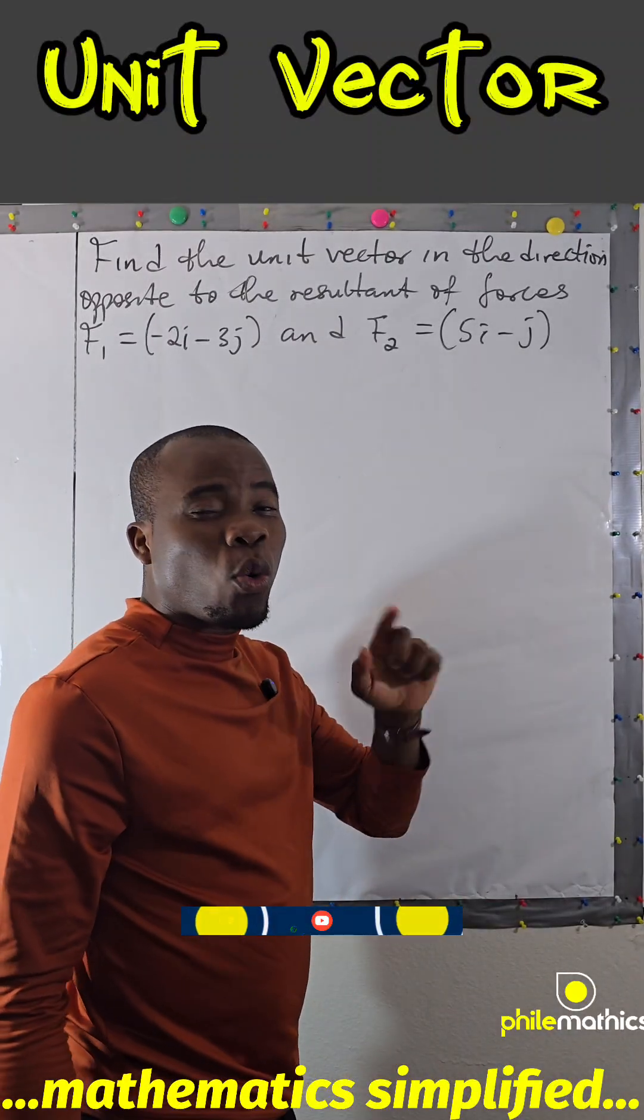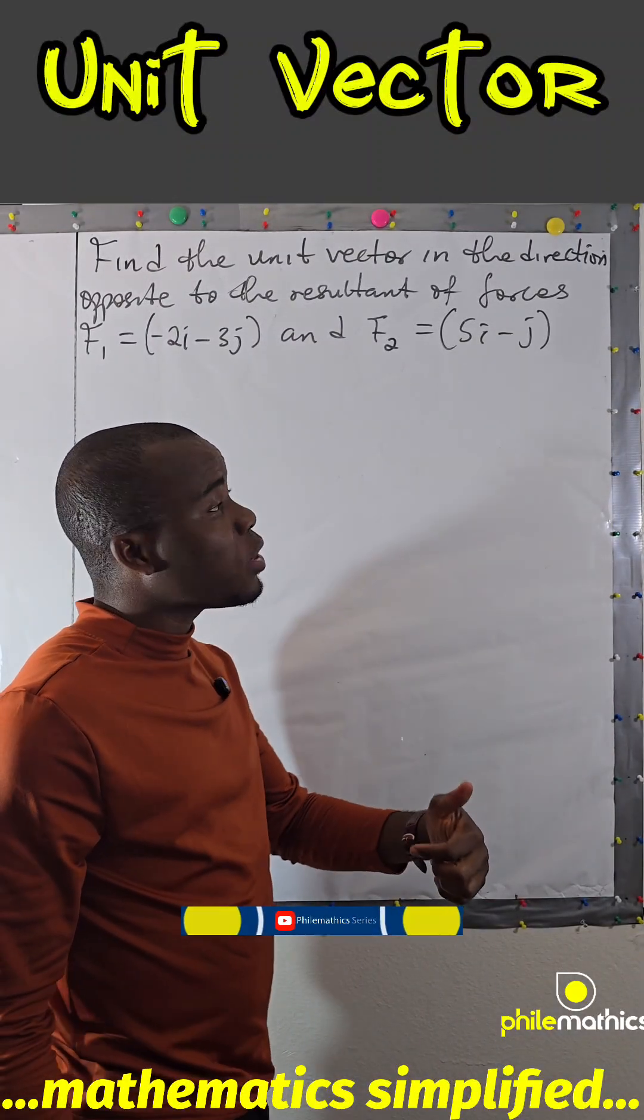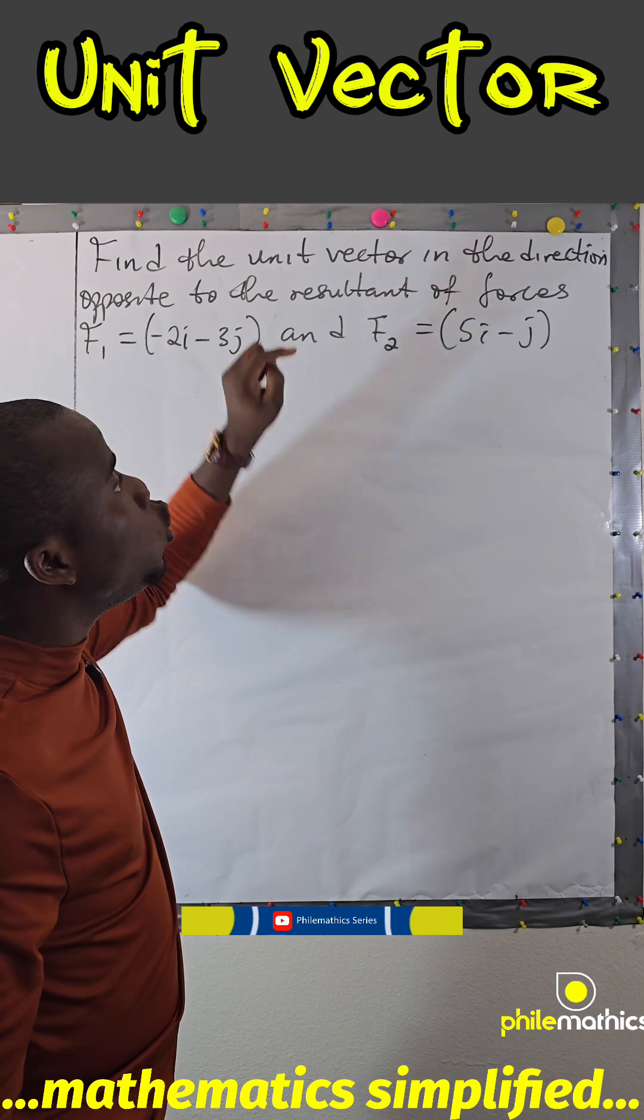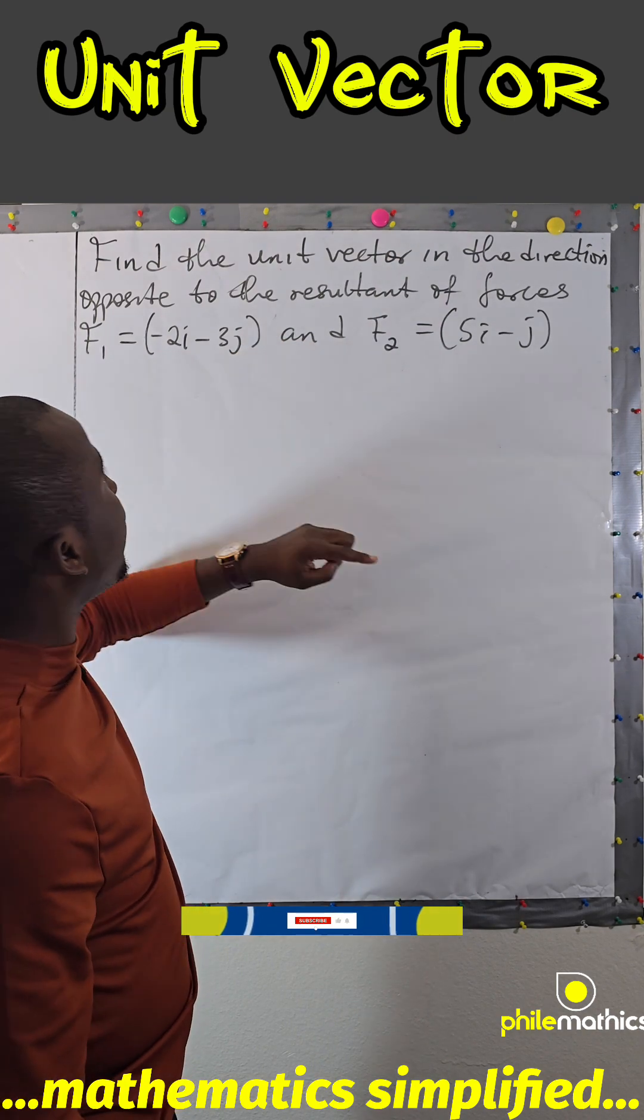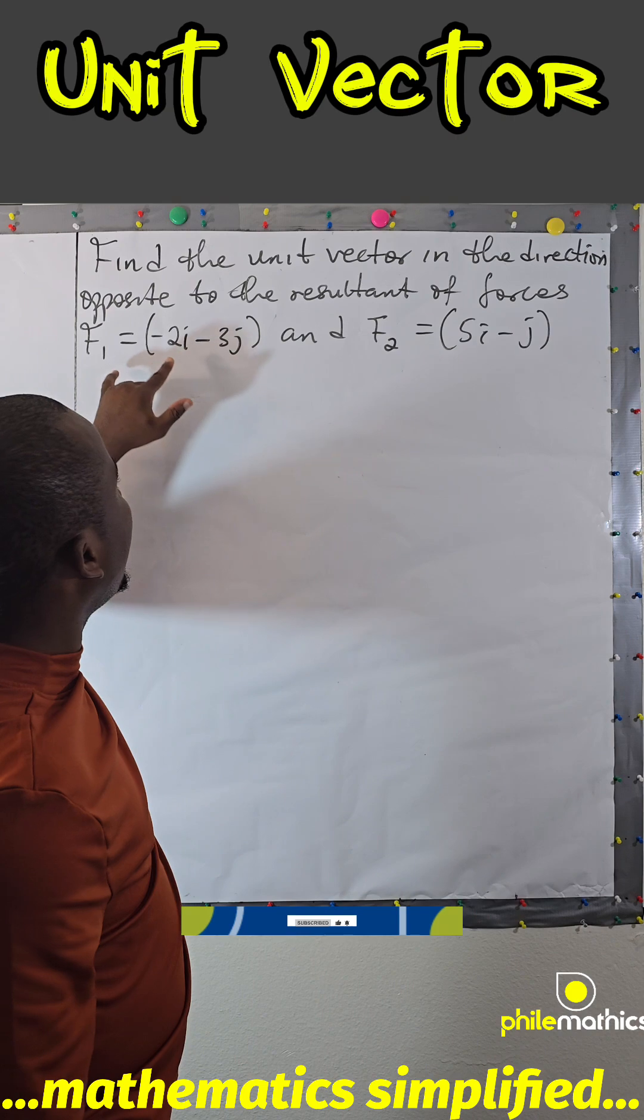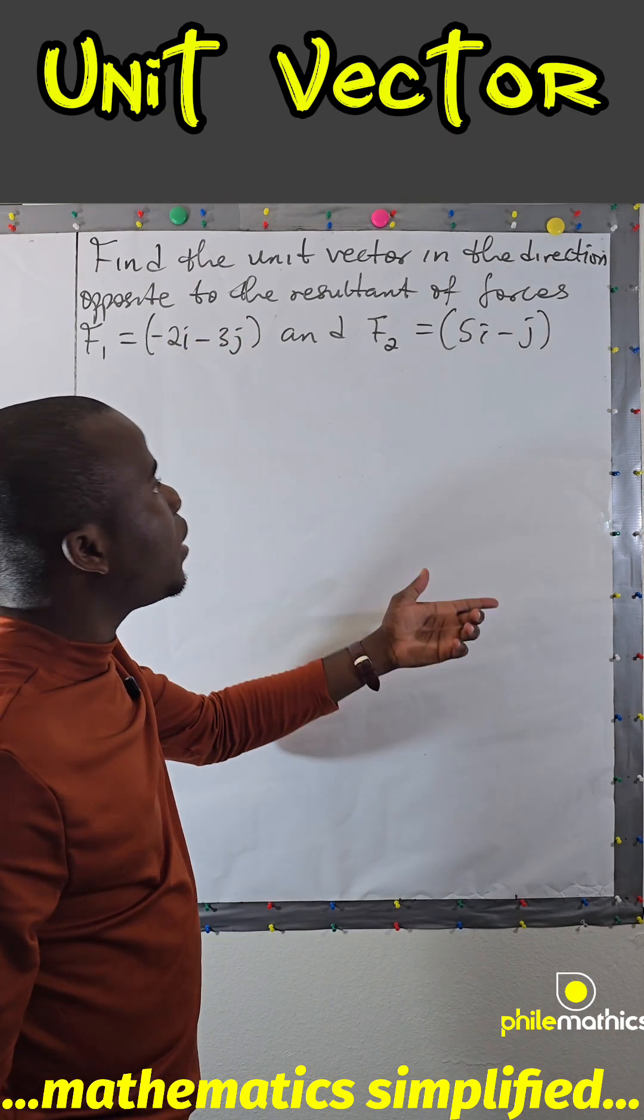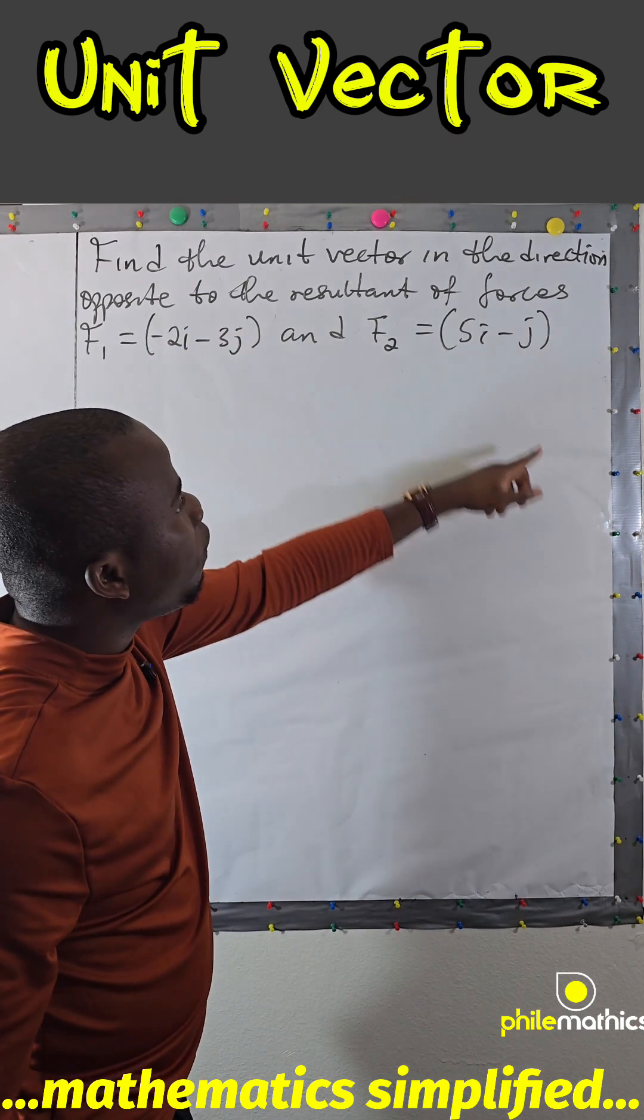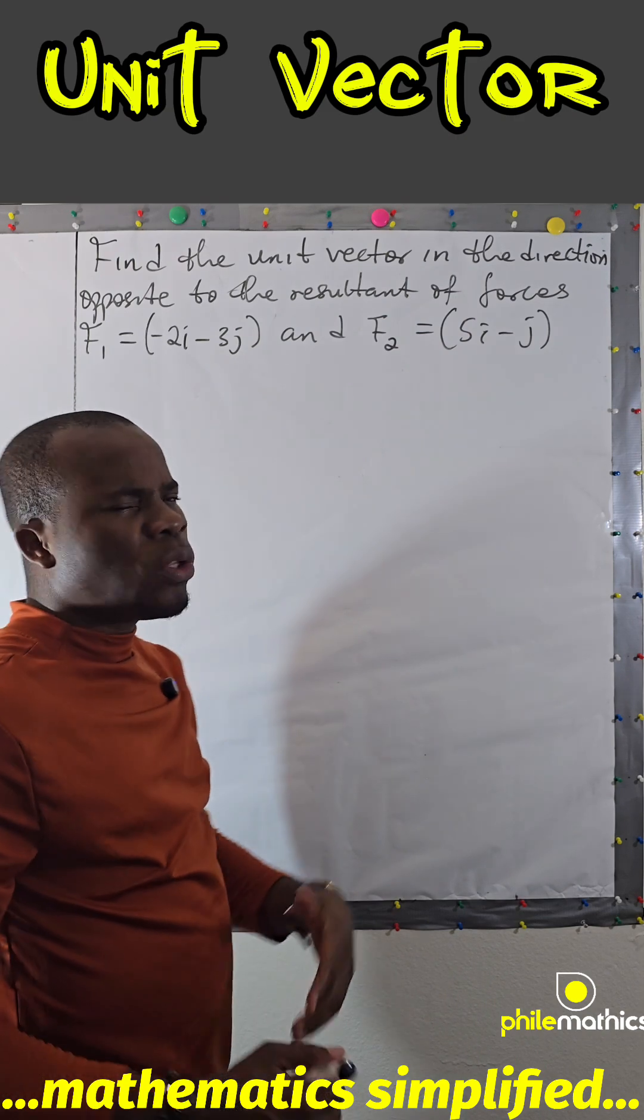This problem is a question on vectors and we are asked to find the unit vector in the direction opposite to the resultant of forces f1 = -2i - 3j and f2 = 5i - j.